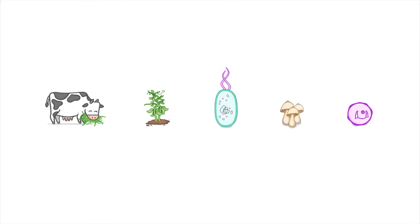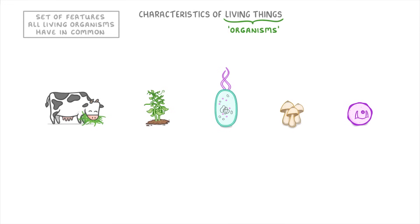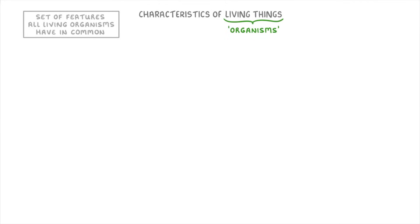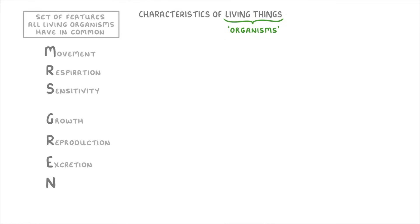In today's video we're going to be looking at the characteristics of living things, which we can also call organisms. We're going to cover the set of features that all living organisms have in common, whether it's an animal, a plant, a bacteria, a fungi, or a protoctist. There are seven key features that you need to know about, and to help you remember them we can use the acronym MRS GREN, where each letter stands for one of the features: Movement, Respiration, Sensitivity, Growth, Reproduction, Excretion, and Nutrition.